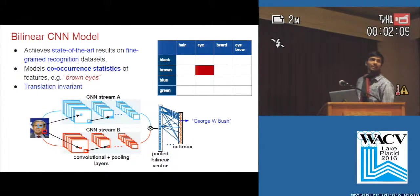I'll go over the bilinear CNN model in short. It's basically a two-stream architecture where we take an outer product of the last layer convolutional features. What this basically gives us is co-occurrence statistics.